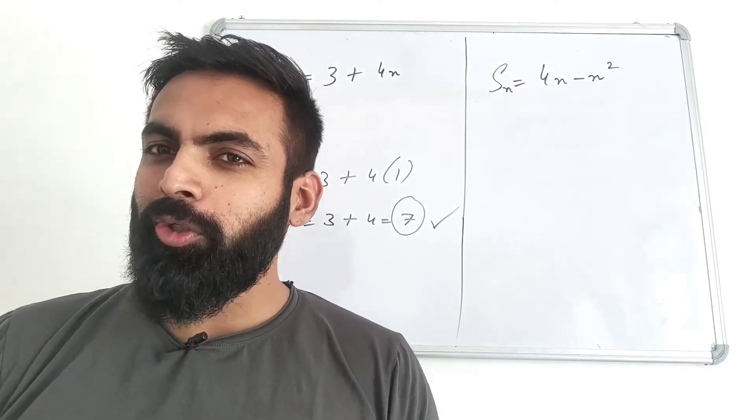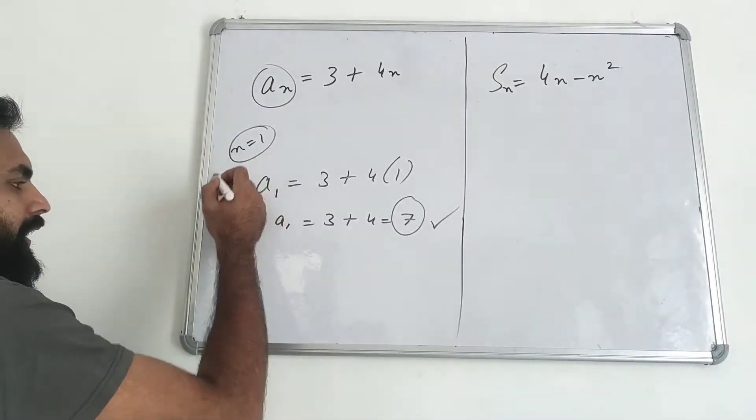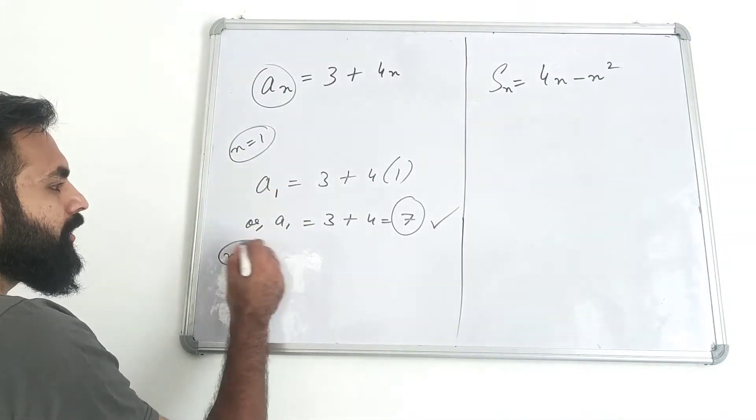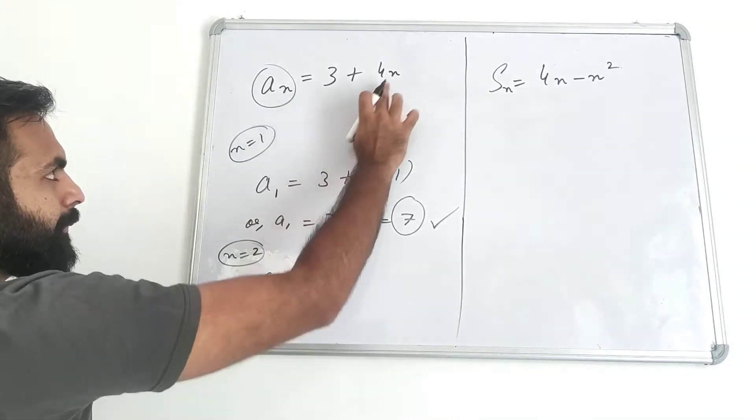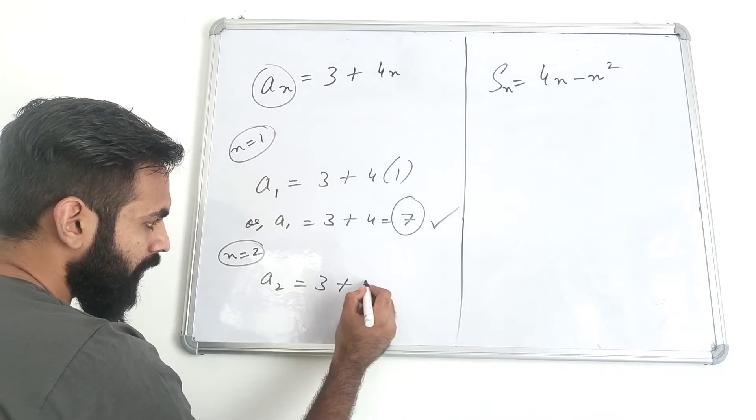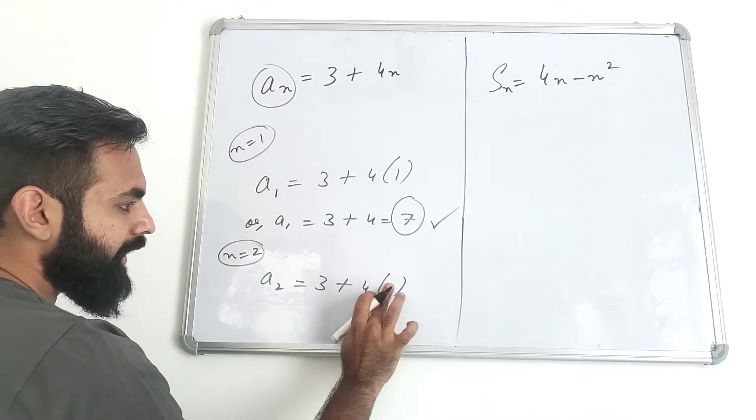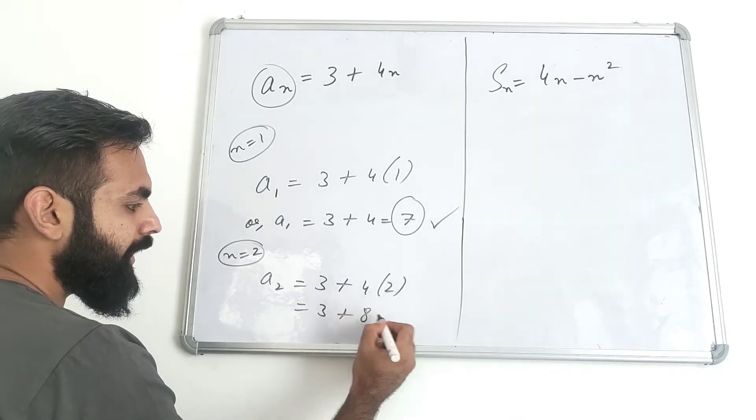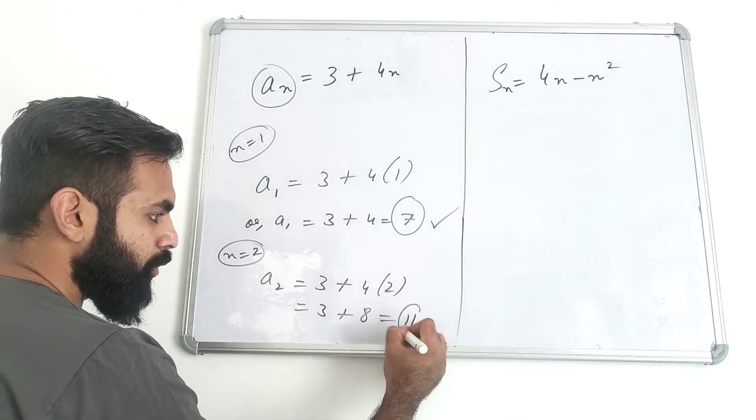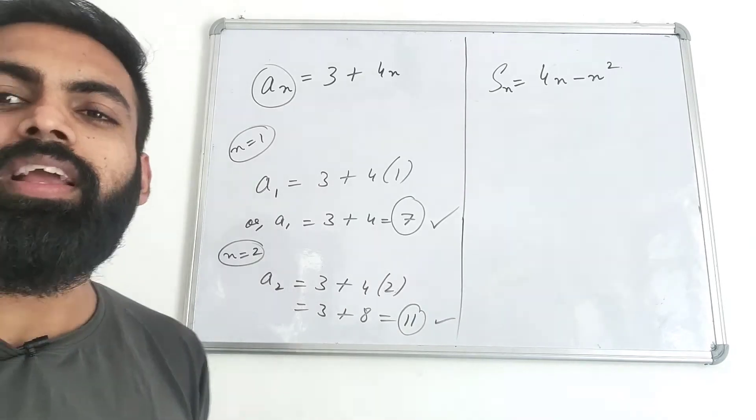If I say take the second term, then how will you take it? Of course, you will put n equals 2. If you put 2 here, A2 will be 3 plus 4 into 2, that is 3 plus 8, equal to 11. So AP's second term is 11.